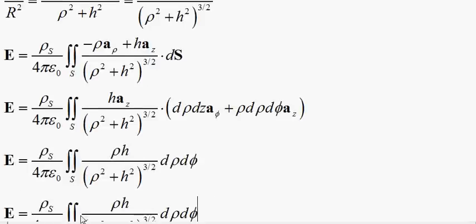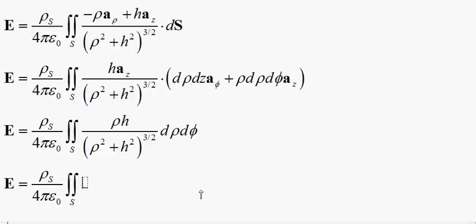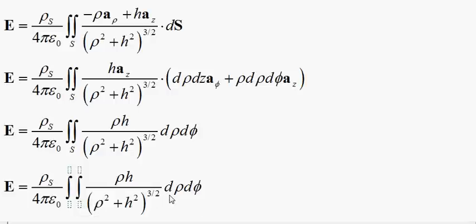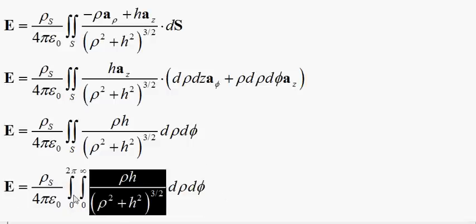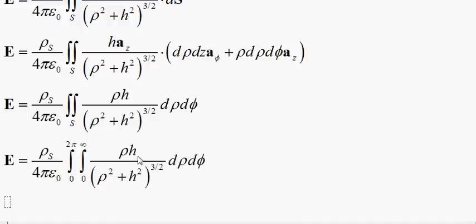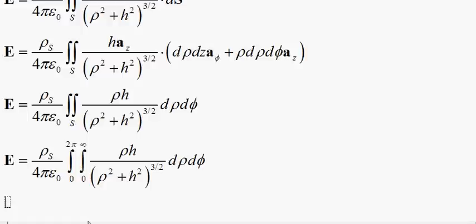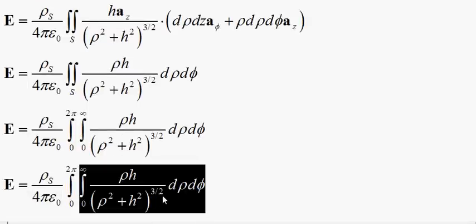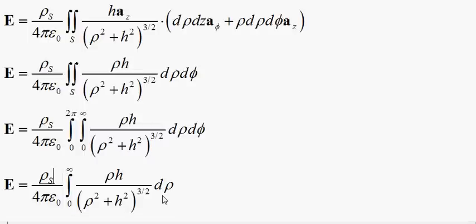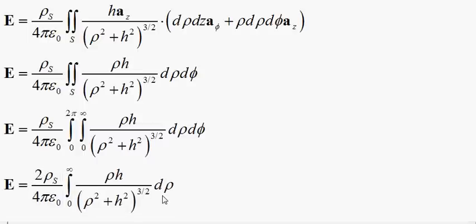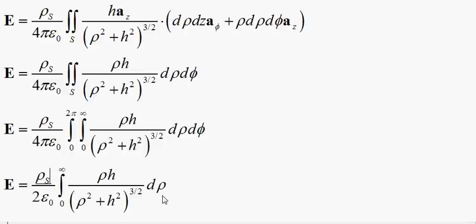Let's establish our limits. The rho limits are from zero to infinity, because we are integrating the whole plane. And the phi limits go from zero to two pi. This integral doesn't depend on the angle at all, so we can do the outer phi integral first — that just gives us two pi outside. But then the pi's cancel, so now we just have the remaining integral.